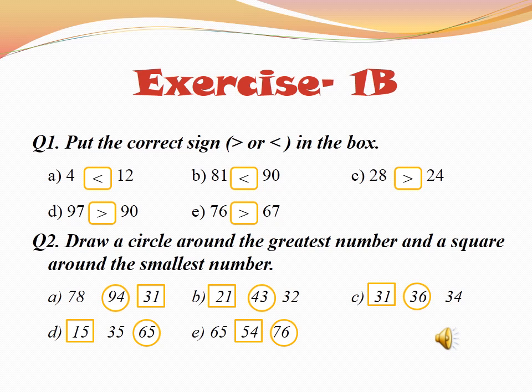In part B, the numbers are 81 and 90. Is 81 greater than or less than 90? 81 is less than 90, so we will put the less than sign. Part C numbers are 28 and 24. Is 28 greater than or less than 24? 28 is greater than 24, so we will put the greater than sign. Part D, the numbers are 97 and 90. Is 97 greater than or less than 90? Greater than. So we will put the greater than sign.